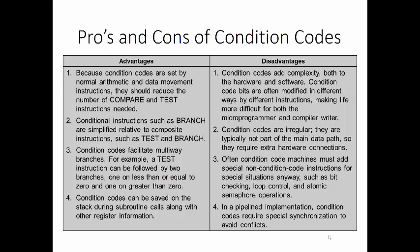Let's see why condition codes are good. They're set by normal arithmetic and data movement instructions, and they should reduce the number of compare and test instructions needed. Condition instructions such as branch are simplified relative to composite instructions such as test and branch. Condition codes facilitate multi-way branches. For example, a testing instruction can be followed by two branches, one on less than or equal to zero, and one on greater than zero. Condition codes can be saved on the stack during subroutine calls along with other register information.